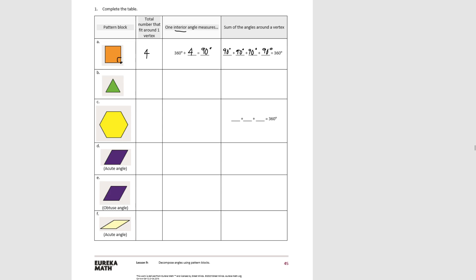Then we also did it for the triangle. We saw that six fit around the central vertex, and each of these was 60 degrees. So we have 360 degrees divided by six, and we saw that each of those angles was 60 degrees. So as an equation: 60 plus 60 plus 60 plus 60 plus 60 plus 60 equals 360 degrees.